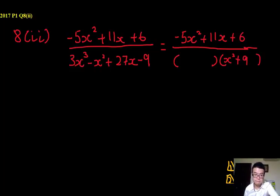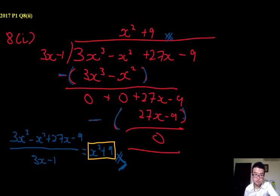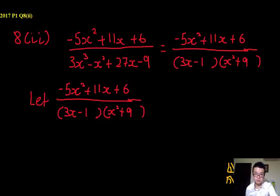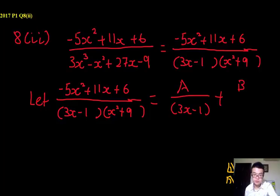And 3x minus 1 on the other hand, so you can quickly let the rest be this fraction, as followed from your formula booklet or whatever you can remember, A over 3x minus 1 plus, sorry, since it's x squared plus 9, the square itself, you can now be Bx plus C.